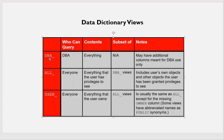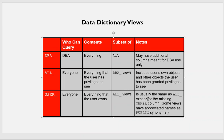ALL_ can be queried by everyone, but only shows objects the user has privileges on. USER_ can also be queried by anyone, but shows only objects owned by that user. So the three hierarchy levels are: USER_, ALL_, and DBA_.